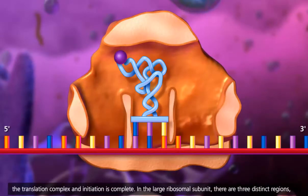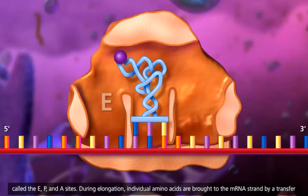In the large ribosomal subunit, there are three distinct regions called the E, P, and A sites.